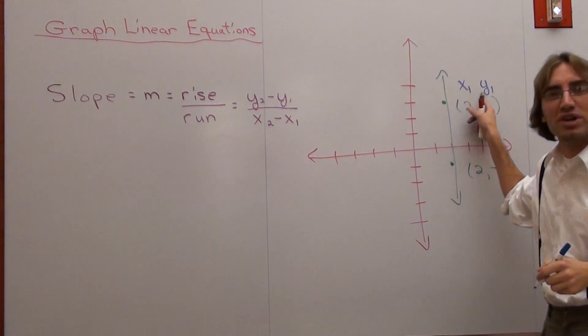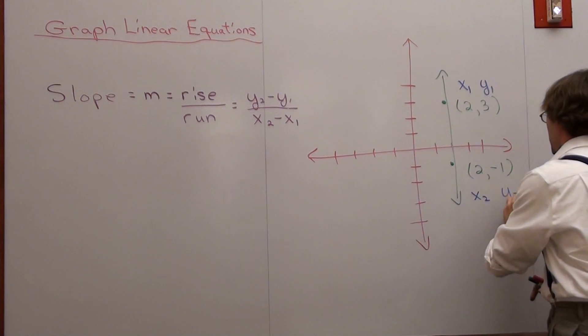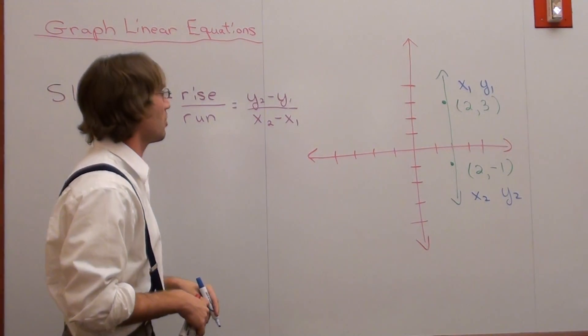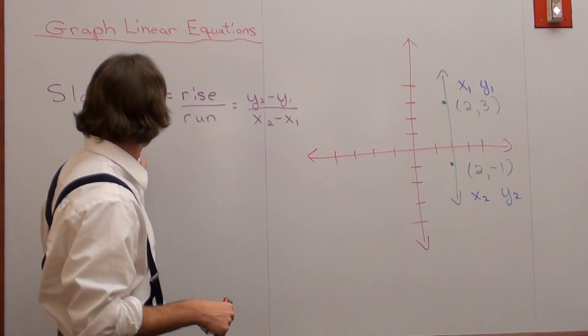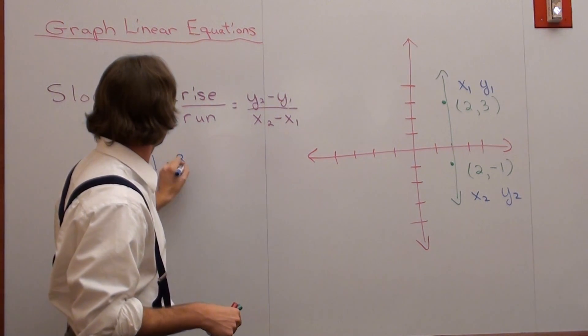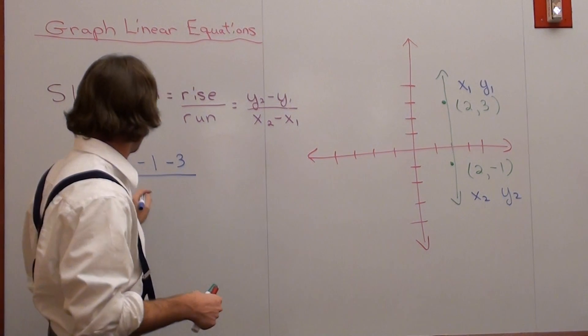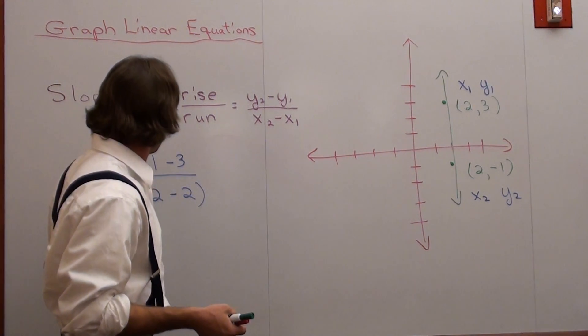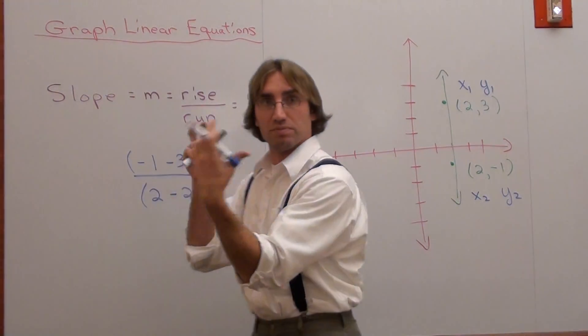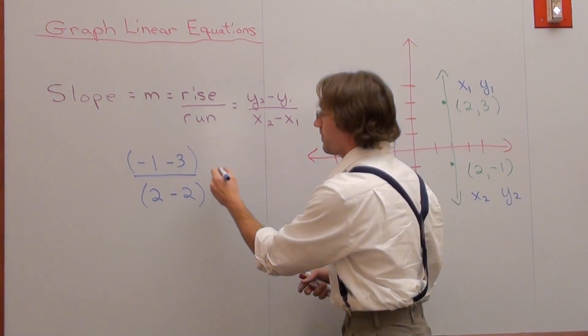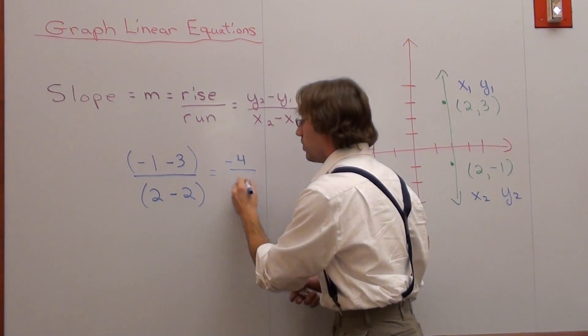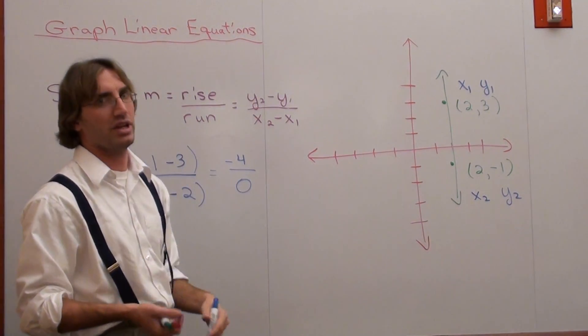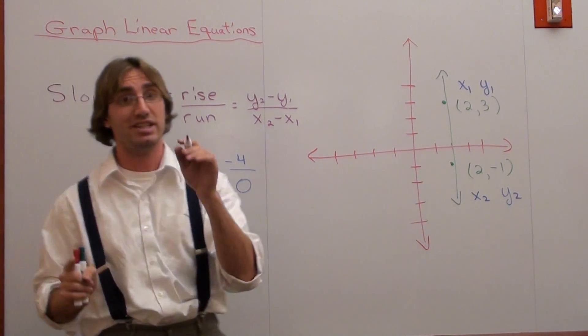I'm going to call this X1 and Y1, X2 and Y2. Kind of plug it in or substitute it into our formula, Y2 minus Y1 over X2 minus X1, or X sub 1. Put parentheses about both, make them both quantities. You have negative 4 over 0. If you plug that into your calculator, you're going to get error or domain error. It just means that it's undefined.